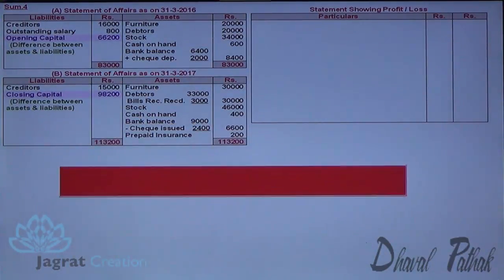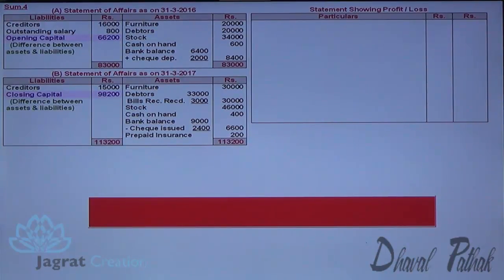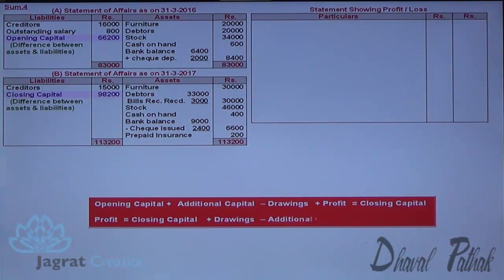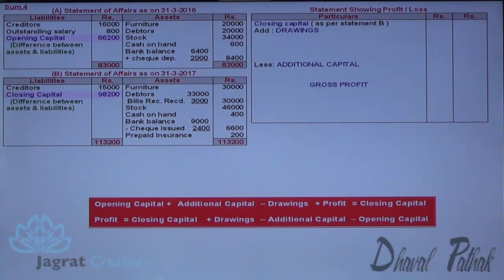Now I will prepare a capital comparison statement using this formula: opening capital plus additional capital equals total capital; minus drawings equals capital withdrawn; that should be the capital at the end of the year, but profit gets added to capital. So the formula is: opening capital plus additional capital minus drawings plus profit equals closing capital. Making profit the subject: closing capital plus drawings minus additional capital minus opening capital gives gross profit. From gross profit I give the effect of adjustments — depreciation, etc.